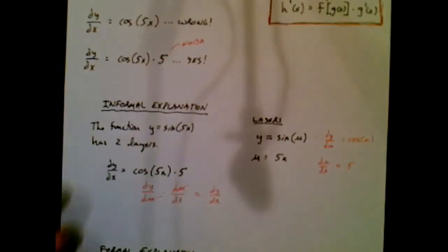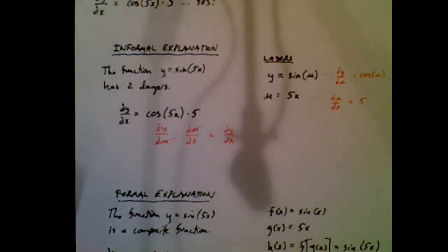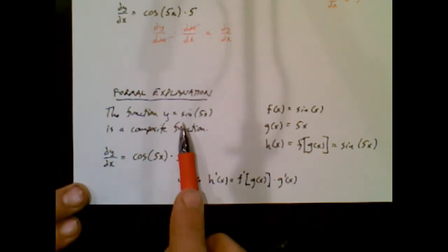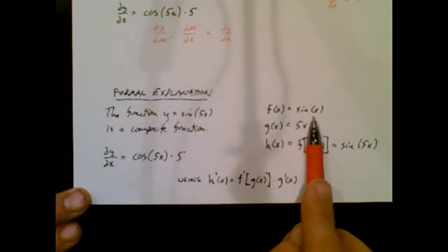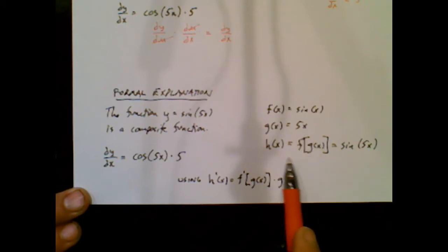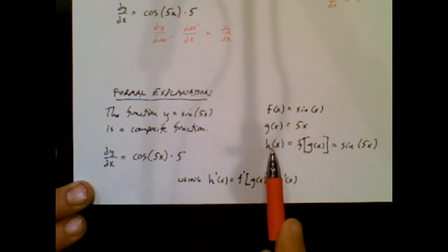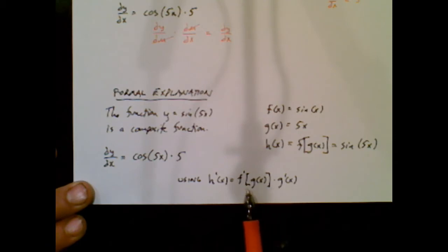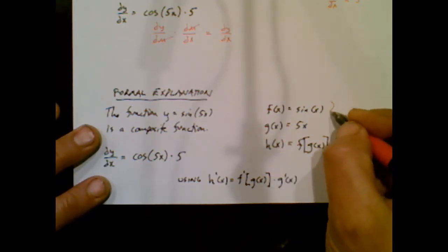So the formal explanation says this is a composite function where I have f of x and g of x. So h of x, my composite function is f of g of x. That's what that is. The formal rule says the derivative of a composite function is the derivative times the derivative. I don't know how to describe that any better. So if I look at f of g of x, let's see. So I guess let me write this down.